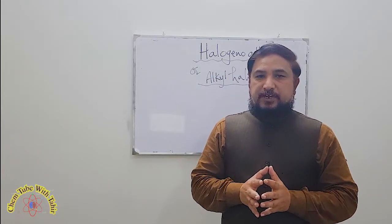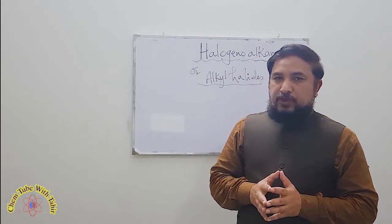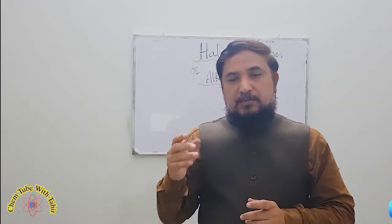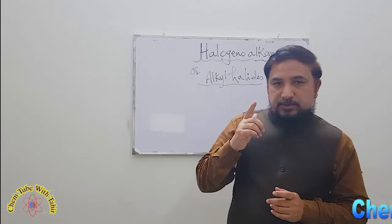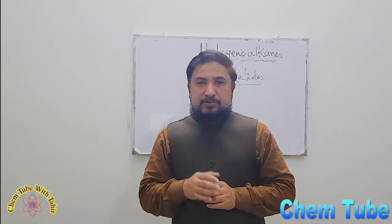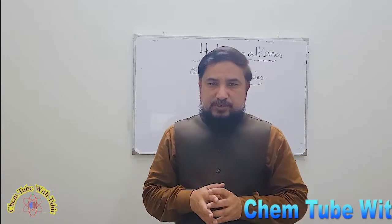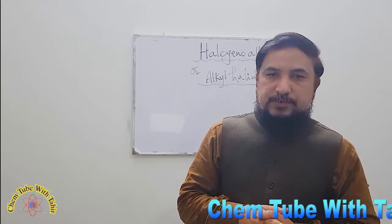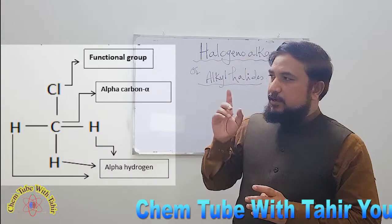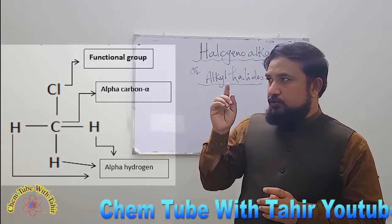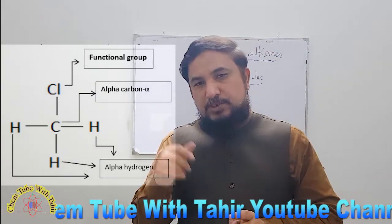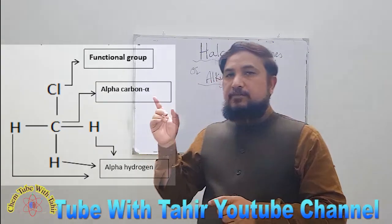Based on different types, we have three different types of haloalkanes. We call them primary haloalkanes, secondary haloalkanes, and tertiary haloalkanes. How do we differentiate between primary, secondary, and tertiary haloalkanes? The basic idea is based on the carbon which is bonded to your halogen. Keep it in mind: the carbon which is bonded to the halogen is known as the alpha-carbon atom.